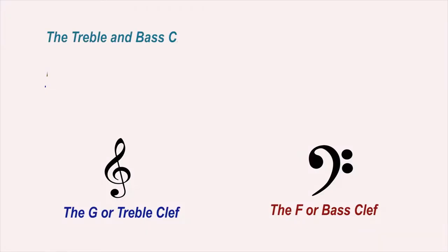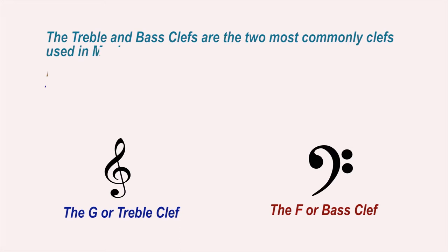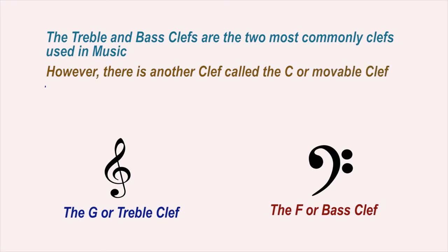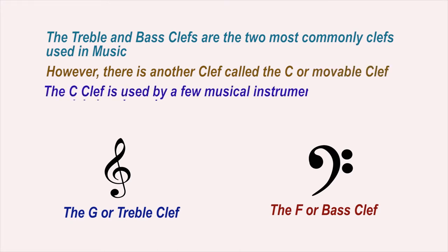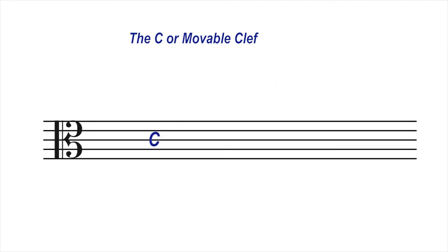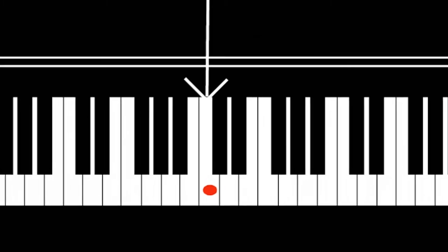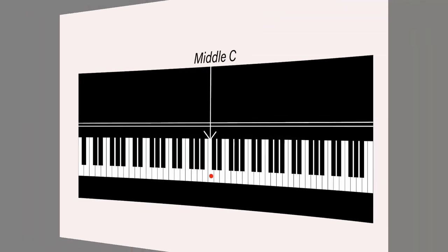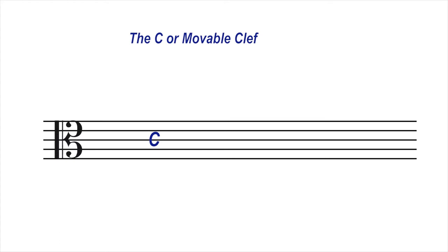The treble and bass clefs are the two most commonly found in music. However, there is another clef called the C or Movable clef, used by some musical instruments and in some special arrangements of choral music. The C or Movable clef is written as shown. The line that passes through the middle of this clef is the almighty middle C — that's the C midway on the piano keyboard as shown. Originally, there were five types of this clef in use, depending on what line it is placed.